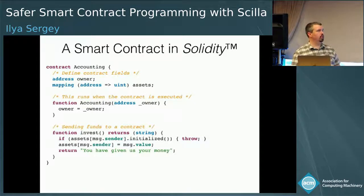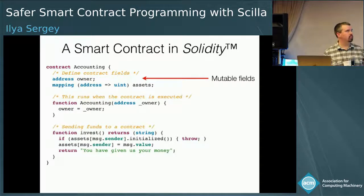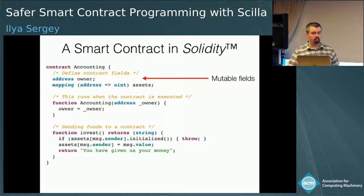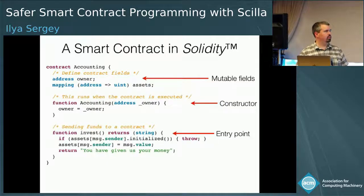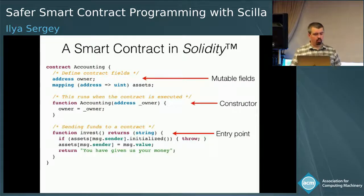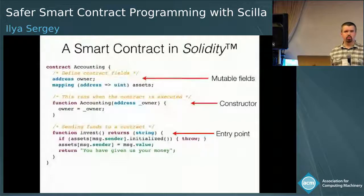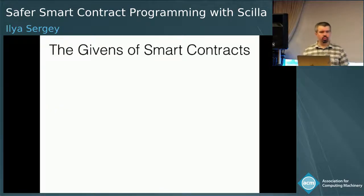The contract is merely a class that comes with a number of mutable fields. For example, we have an owner of such a contract identified by address, and it also has a map of assets saying how much different parties hold currency in this account. There's a constructor and a single entry point determining how this contract might evolve over time. You can recognize it's very similar to a method in languages such as Java or Scala. Here is the function called invest that allows multiple parties to contribute money into this contract.